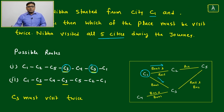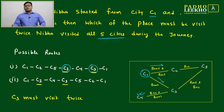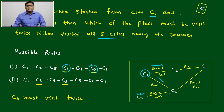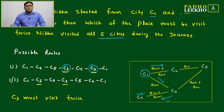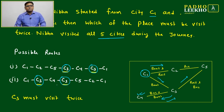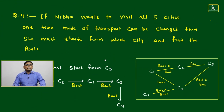Therefore, from C3, Niva must first take a diversion toward C4, then return from C4 back to C3, afterwards go toward C5, then to C2, and finally back to C1. The route becomes: C1 → C3 → C4 → C3 → C5 → C2 → C1. In both possible routes, C3 must be covered twice. So the answer is C3 must be visited twice.